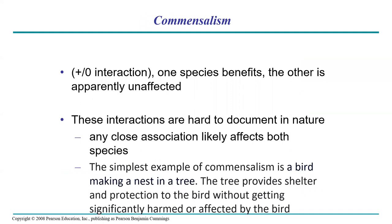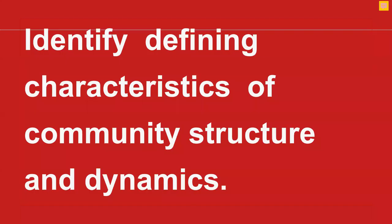Commensalism is another interaction — a positive-neutral interaction that is very rare. One species benefits but the other is not really affected. Any close association likely affects both species in most cases, but in commensalism one species benefits while the other is unharmed or unaffected. The simplest example is a bird making a nest in a tree — the tree provides shelter and protection to the bird without being significantly harmed or affected. This ends our first series on community ecology; next we'll talk about community structure and dynamics.